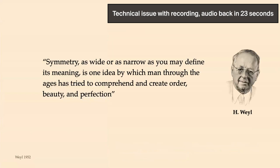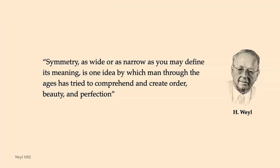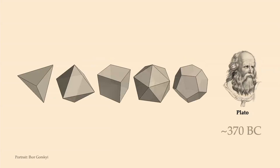The Greeks used symmetry and perfection to explain why music sounds well. They also believed all matter in the universe is composed of tiny symmetric objects — polyhedra we now call Platonic solids — because they are so perfect. This is actually how crystals look, so it's not a completely crazy idea. The Greeks are also credited with formalizing modern geometry.